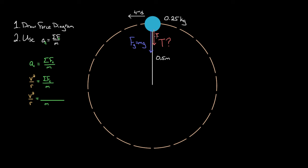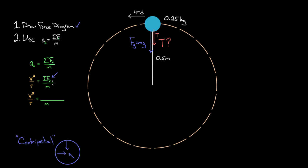The trickiest part is figuring out what to plug in for the centripetal force. We look at our force diagram — it holds all the information about the forces as long as we drew it well. We have a force of tension and a force of gravity. Should we include gravity in the centripetal force calculation? Yes, because the word centripetal just means pointing toward the center of the circle, and at the top of the path, gravity does point toward the center.